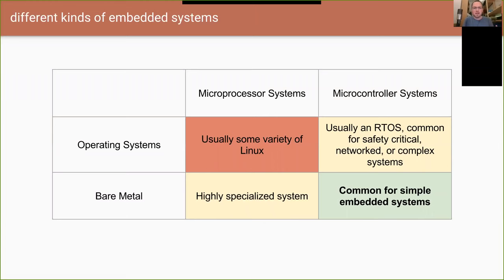There are a lot of different kinds of embedded systems, but I've tried to group them into four big groups. When you have a microprocessor system with an operating system, this is what you're used to — either a desktop PC or something like a Raspberry Pi. For all intents and purposes, it's still a full computer. I put it in red because it's less interesting for our talk today. If you have a full OS, Linux, lots of resources, Rust probably already works for you — you can just use rustup and start working.